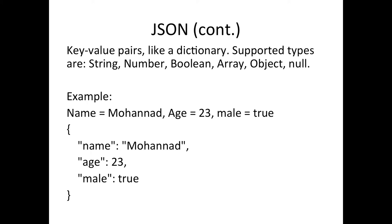The supported types are string, numbers, booleans, arrays, objects, and null. Here's a simple example: a dictionary with name equal to "Muhammad", age equal to 23, male equals true. So name has quotes on the value since it's a string, 23 has no quotes since it's a number, and true has no quotes since it's a boolean. Everything on the left side of the colon (the key) is usually in quotes. On the right side it may or may not have quotes depending on whether it's a string.